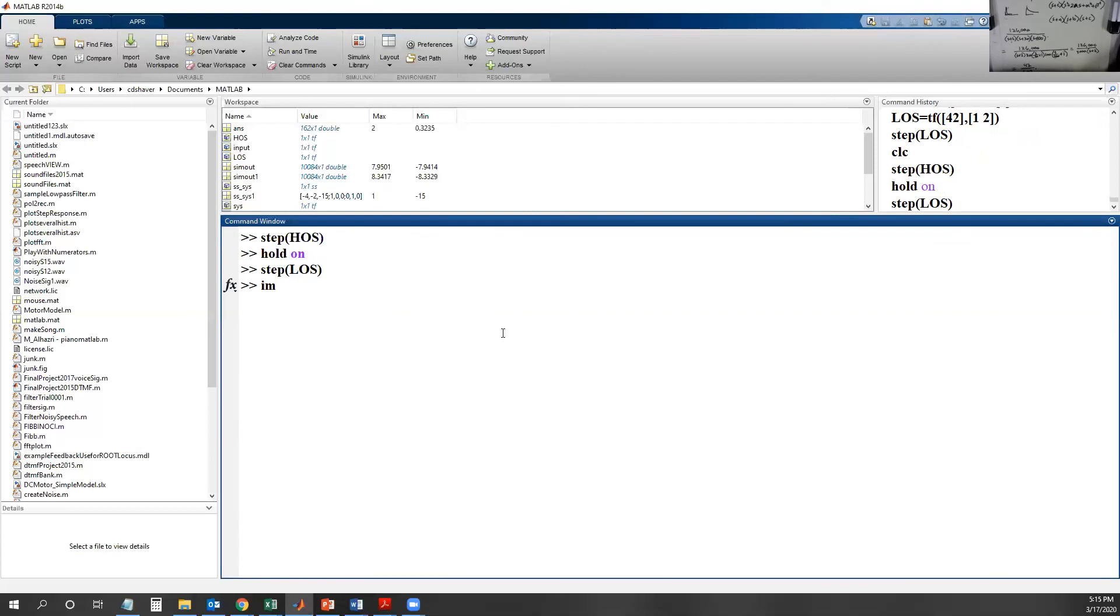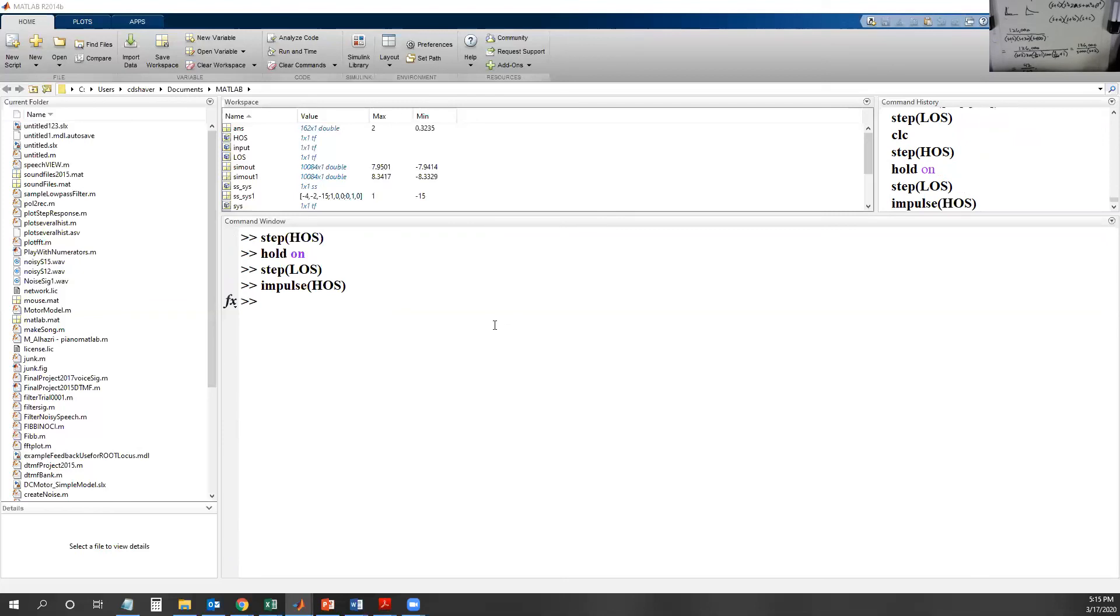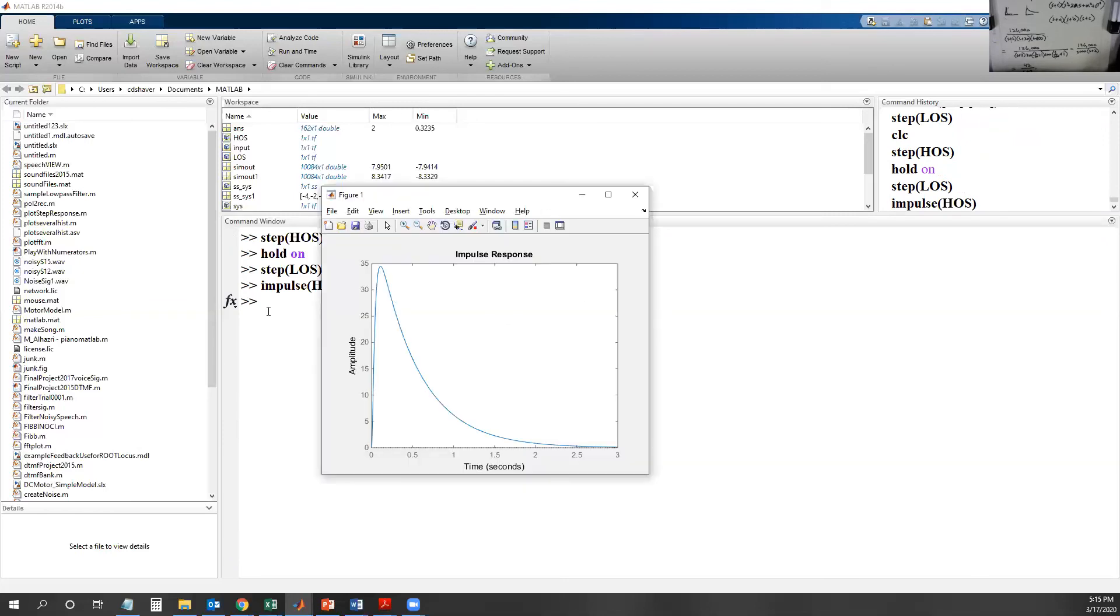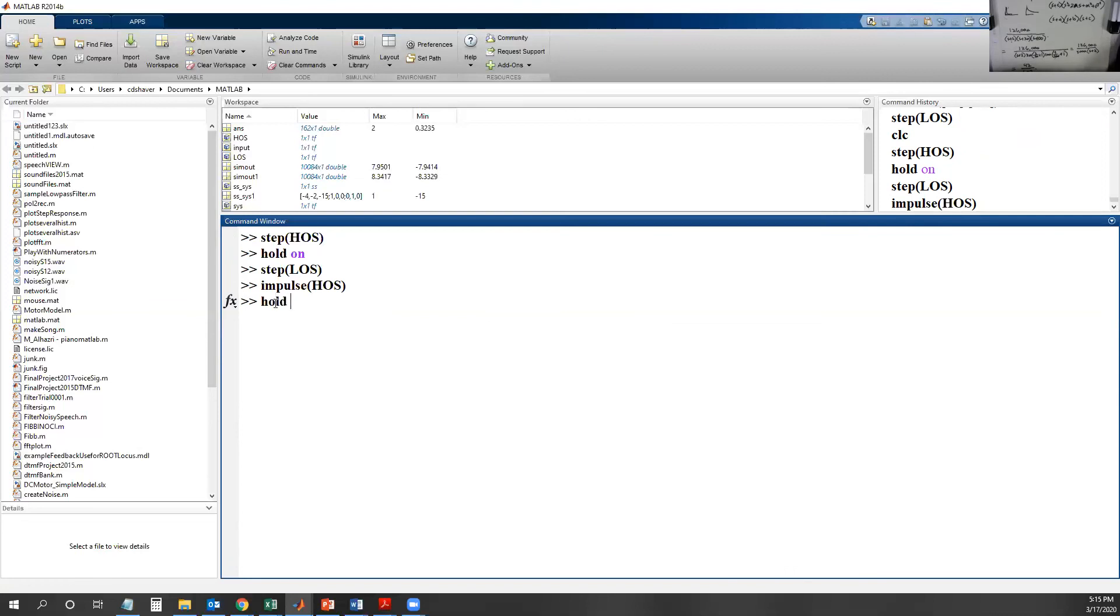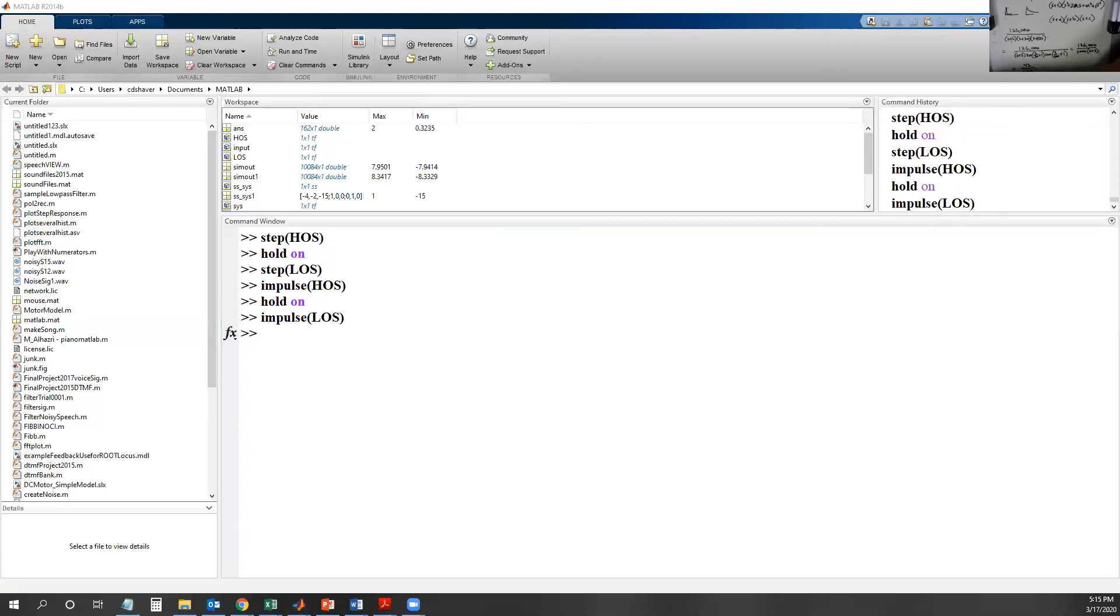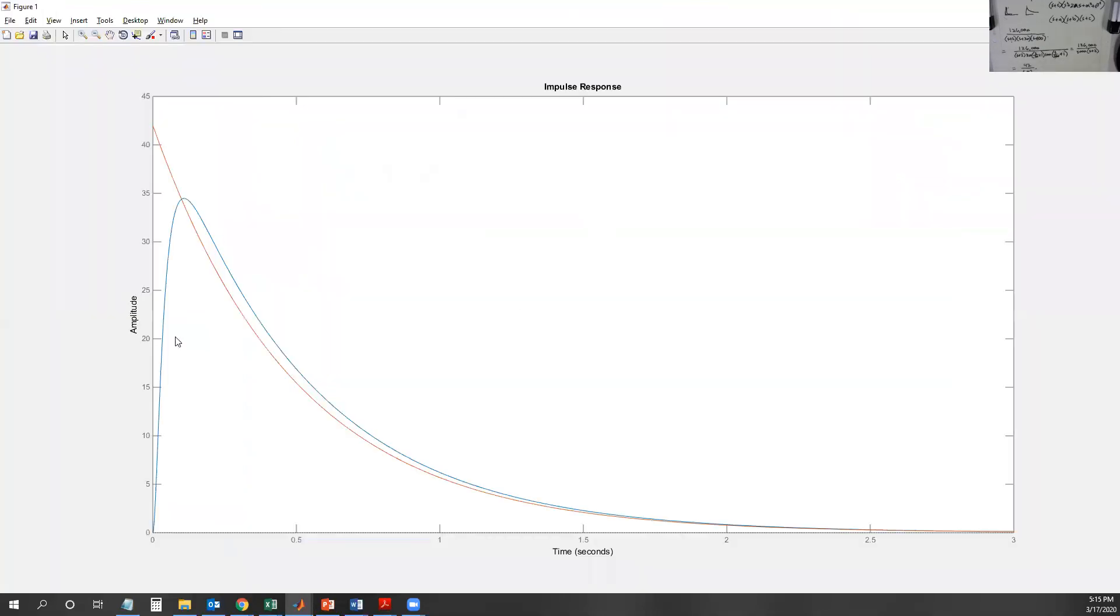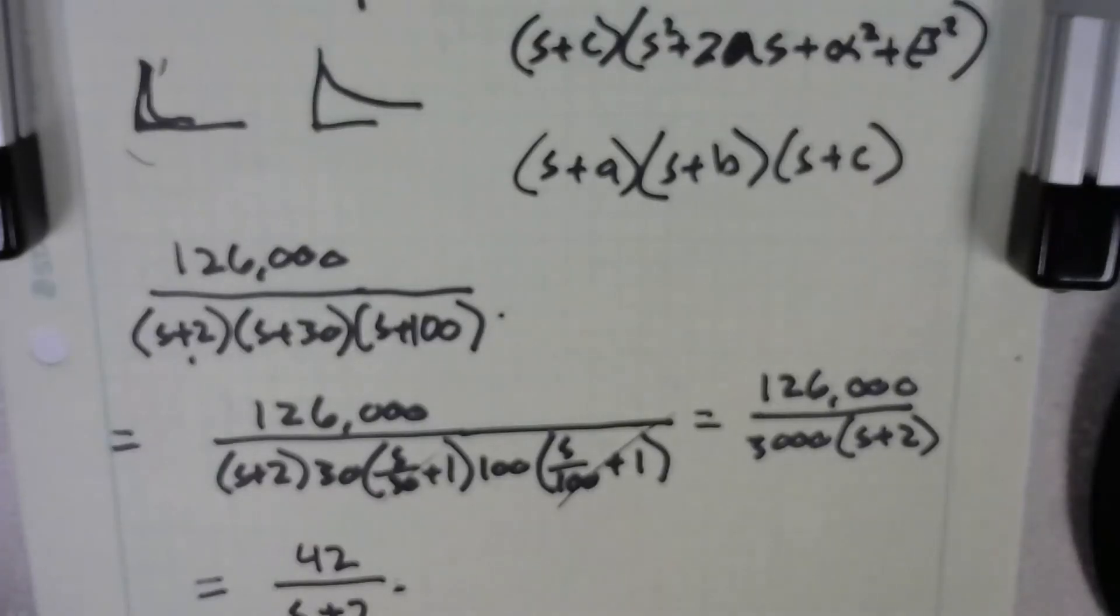So we'll do the same thing with the impulse functions. We'll impulse the high order system and we can see the result there. We can see what we get. And then we're going to hold on again and impulse the low order system. And voila. Now of course there's not as much detail in it - this is a third order system after all, this is only a first order system. But you can see the two approximate each other. And that is a dominant pole approximation. So that will do it for now.